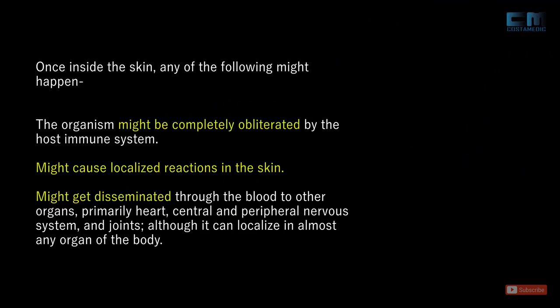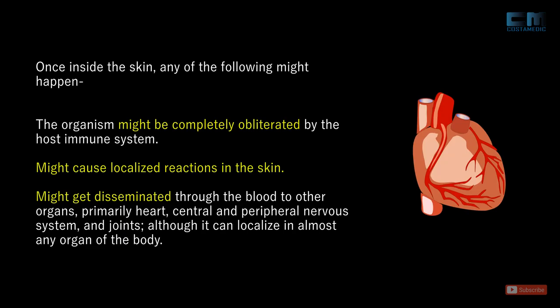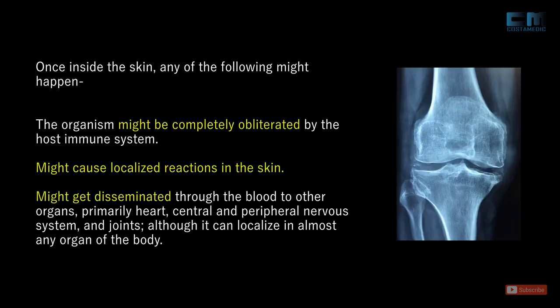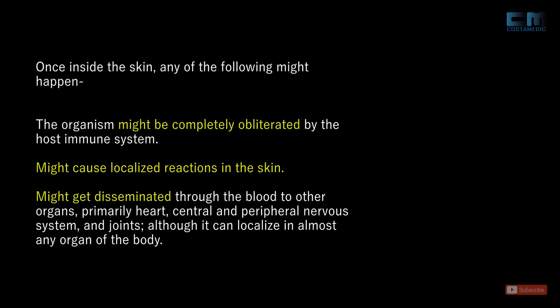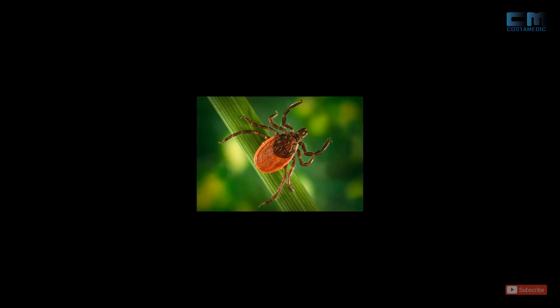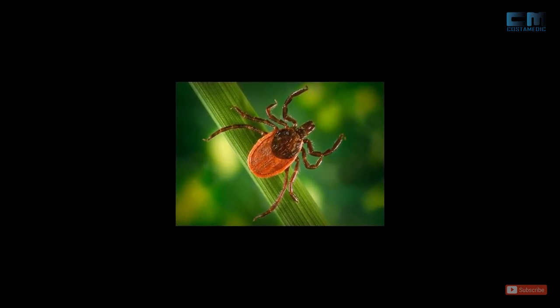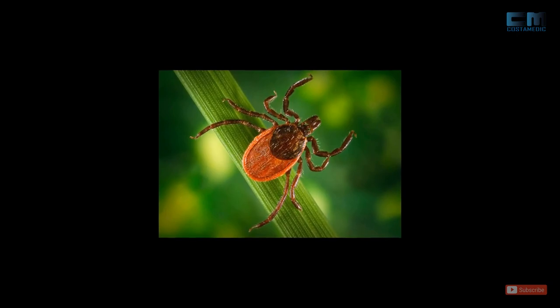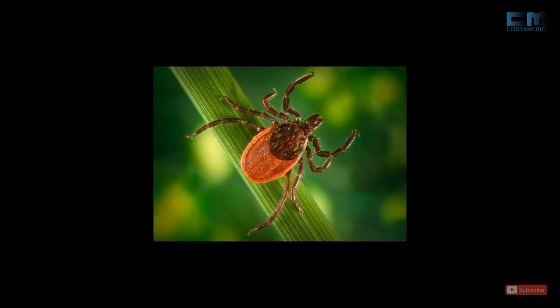Once the bacteria gets inside the skin, any of the following might happen: the organism might be completely obliterated by the host immune system, might cause a localized reaction in the skin, or might get disseminated through the blood to other organs — primarily the heart, central and peripheral nervous system, and joints — although it can localize in almost any organ of the body. Since the tick is very small in size, only 3–5 mm long, the bite is often painless and remains unnoticed.